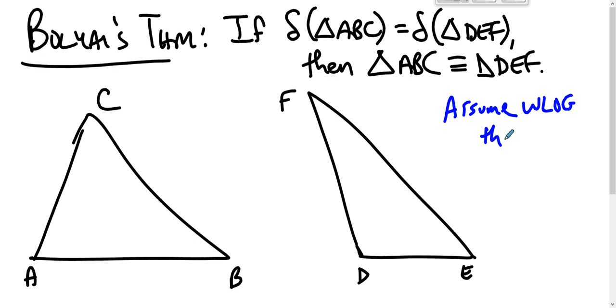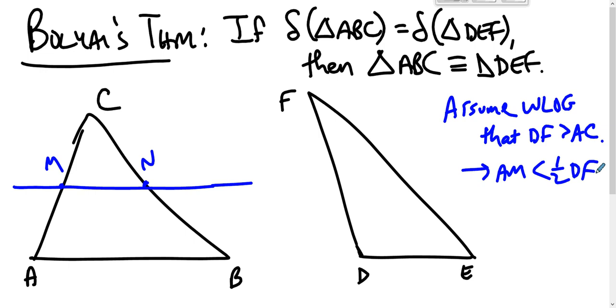that DF is longer than AC. And that means when we go to take the midpoints here, as if we were going to construct the associated Saccheri quad, when that happens—because DF is bigger than AC—this AM is less than half of DF, right? So then we choose G on MN